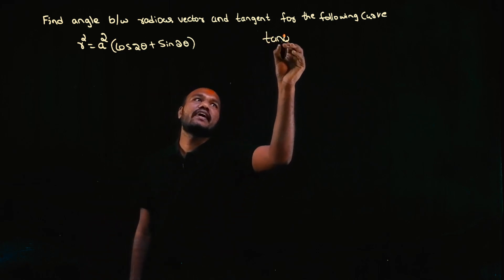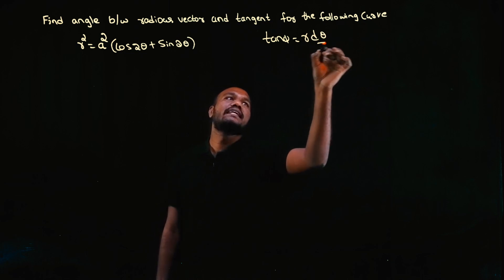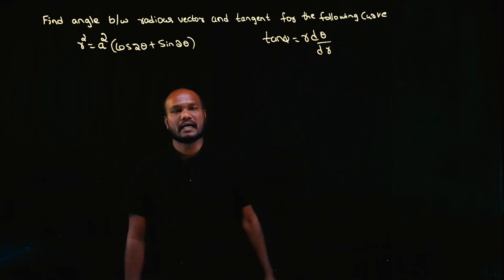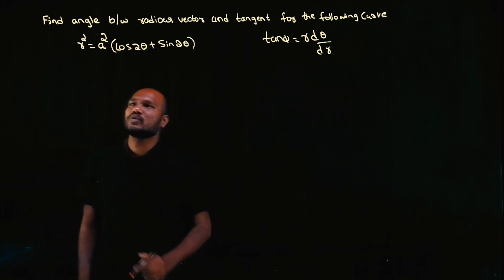How to do that? We have to find the tan phi value. The formula is r into dθ upon dr. To find dθ by dr, let's take log on both sides.